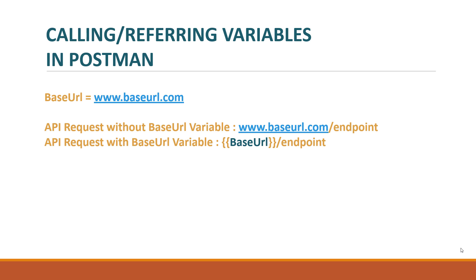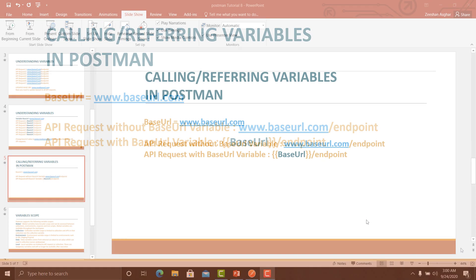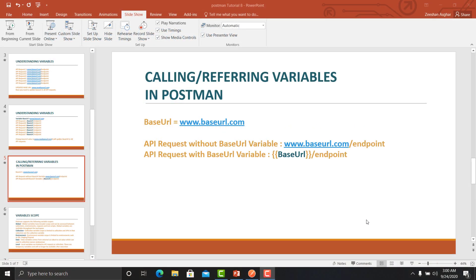Now let's see how to call or refer to variables in Postman. If you have defined a variable called base URL, you call it in your request or collection by providing double curly braces, then the name of the variable, and closing with double curly braces.